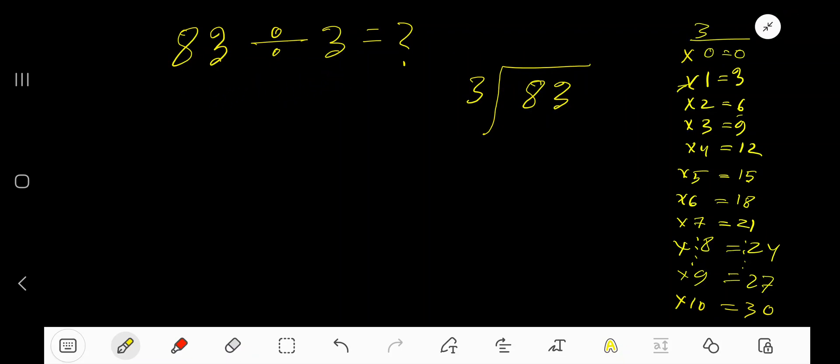83 divided by 3. Here 3 is a divisor, so we need the multiplication table of 3. 3 times 0 is 0, 3 times 1 is 3, 3 times 2 is 6, 3 times 3 is 9, 3 times 4 is 12, 3 times 5 is 15.